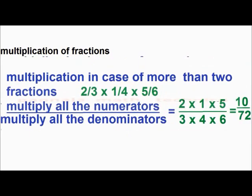Now, multiplication in case of more than 2 fractions: 2 by 3 into 1 by 4 into 5 by 6. Multiply all the numerators: 2 into 1 into 5, that is equal to 10. And multiply all the denominators separately: 3 into 4 into 6, that becomes 72. So, that is equal to 10 by 72.